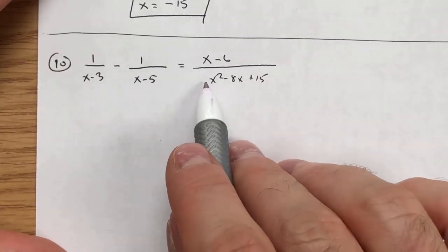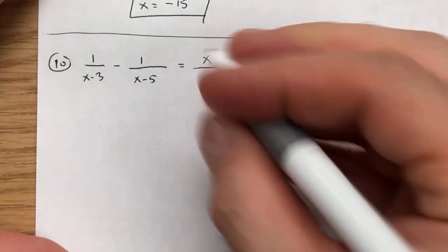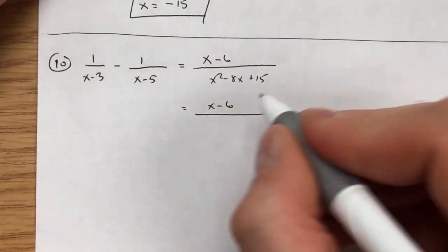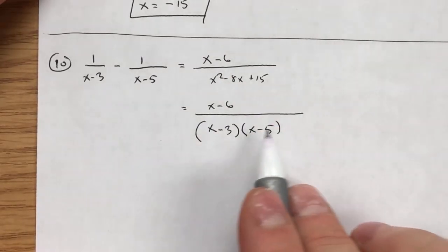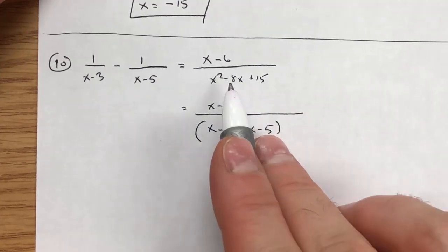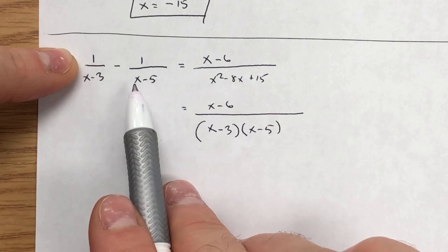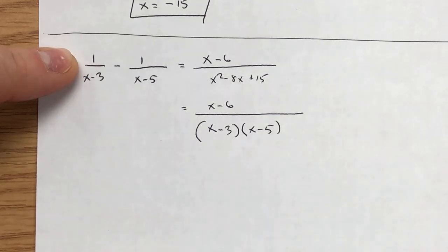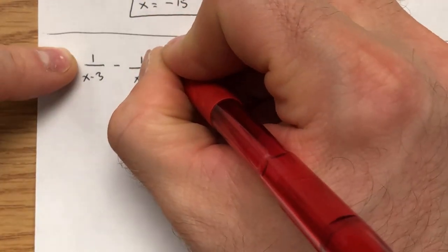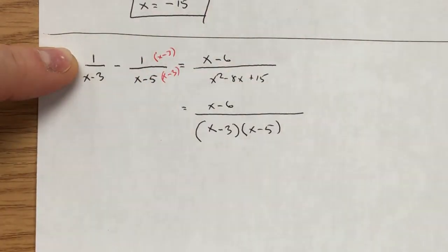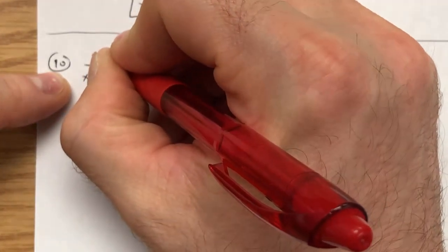Because there's no coefficient in front of the x², I need to find factors of 15 that multiply to give 15 but add up to -8. That gives (x - 3)(x - 5), since -3 times -5 is positive 15 and -3 plus -5 is -8. Now to combine the two left-side fractions into one, I look at what each denominator has that the other doesn't — this has (x - 3), so I multiply top and bottom by (x - 3), and vice versa for (x - 5).